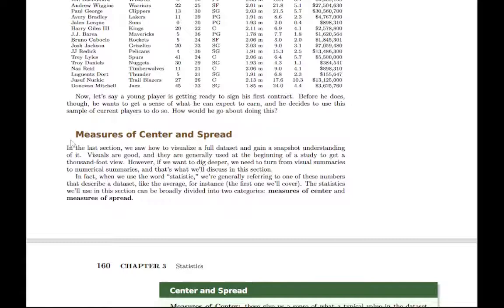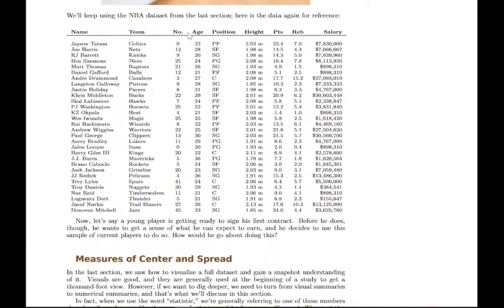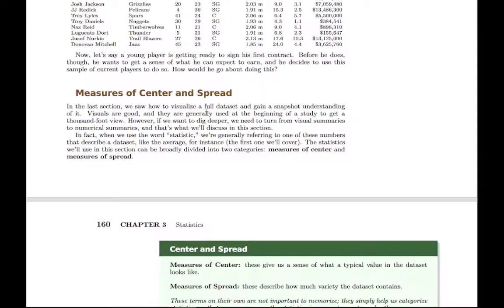Generally speaking, when we're measuring something with statistics there are two broad categories of statistics that will summarize a data set. Say we look at the age variable and want to measure a summary of the age position — there are two general categories. One basically asks what is a typical age, what's the center of this variable, this range of numbers we're looking at, and the other is how spread out are they. So we talk about measures of center and measures of spread.